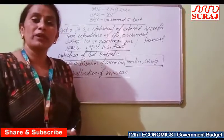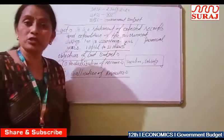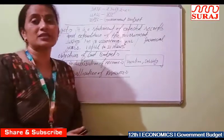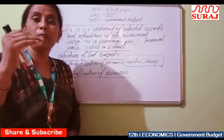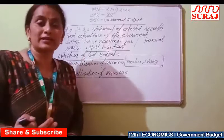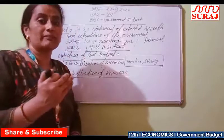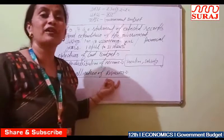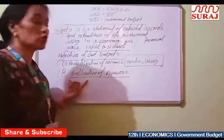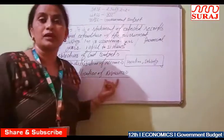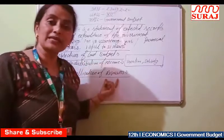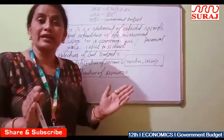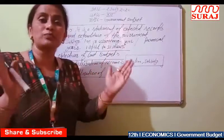What is the main objective of private entrepreneurs? Private producers use resources to produce those types of goods and services which provide them maximum profit. They utilize their resources in those goods where they gain the most profit. We also know that resources are limited in our country. So the government re-allocates resources in such a manner that there is a balance between profit maximization and social welfare.